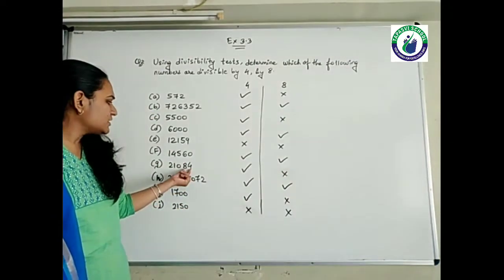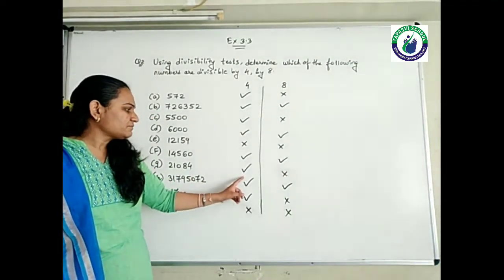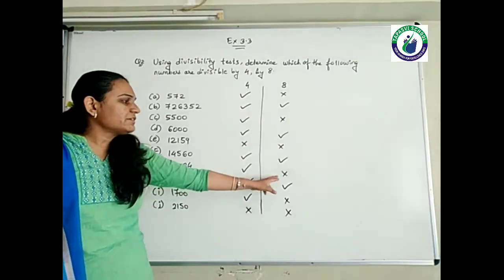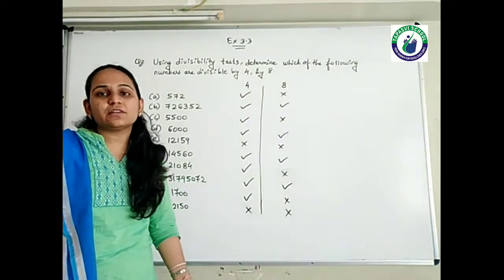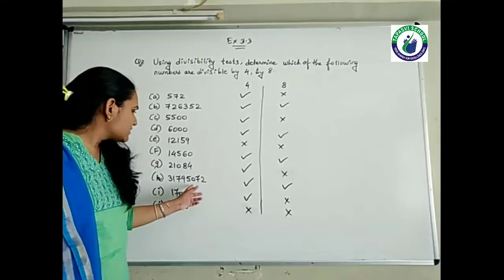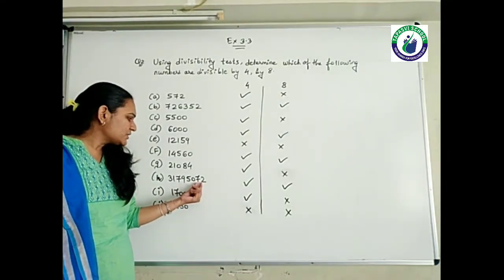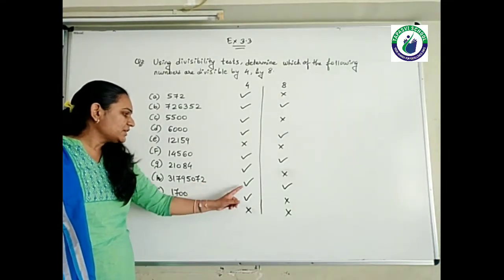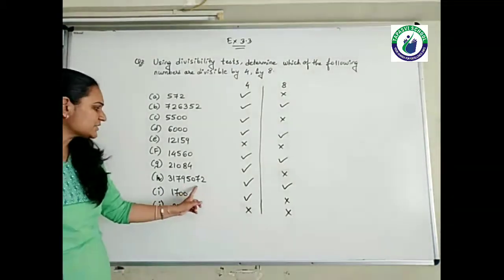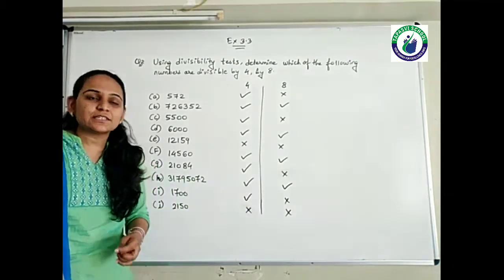Last two digits 84 — yes, it is divisible by 4. Last three digits 84 — it is not divisible by 8. Next number: last two digits are 72, yes it is divisible by 4. Last three digits 72, it is divisible by 8. Nice, 72.